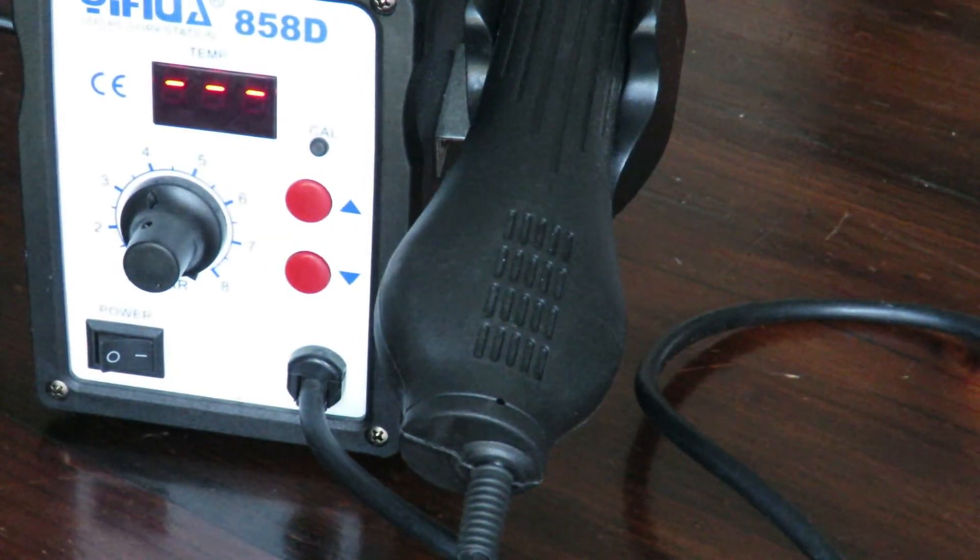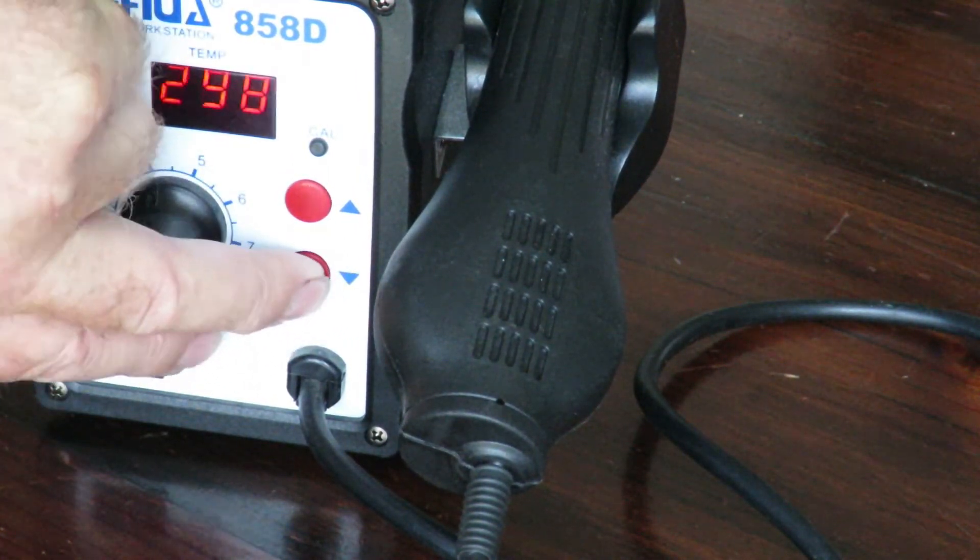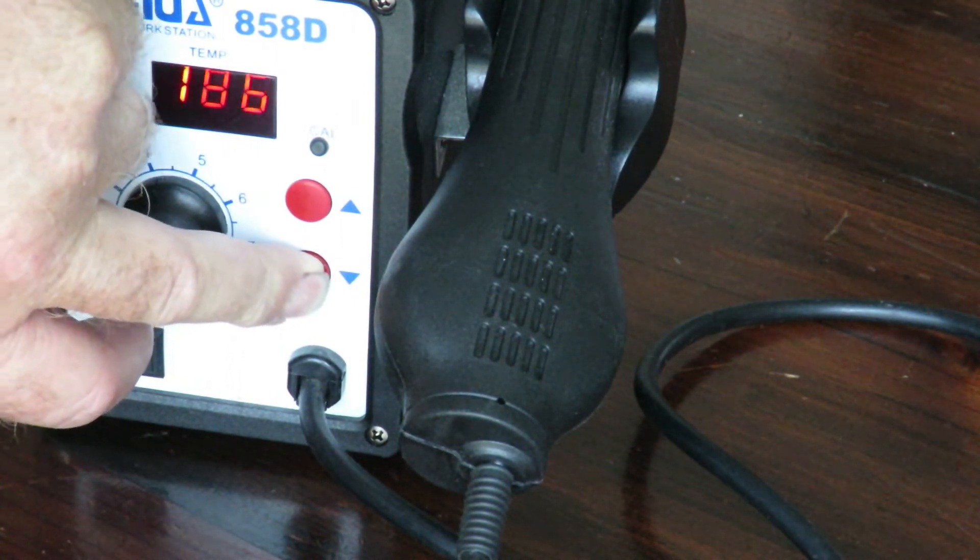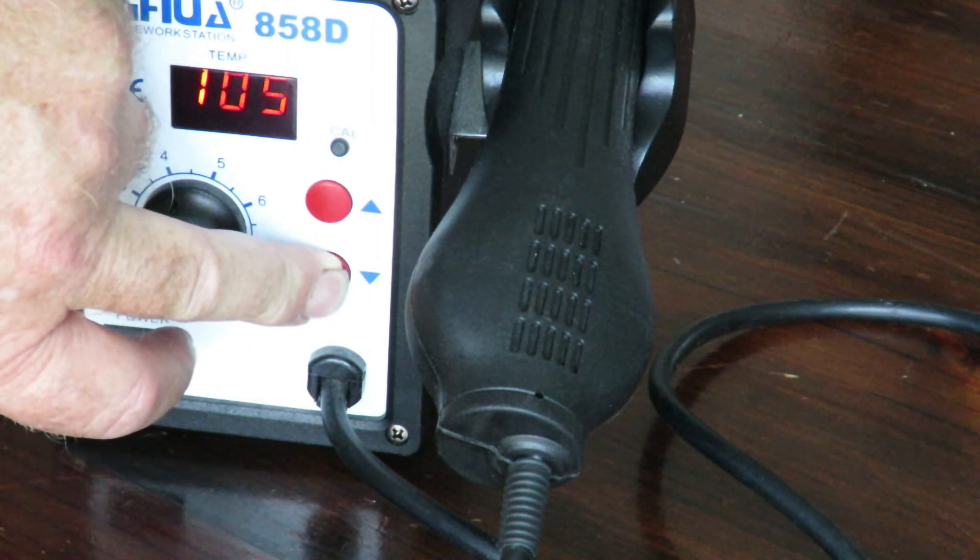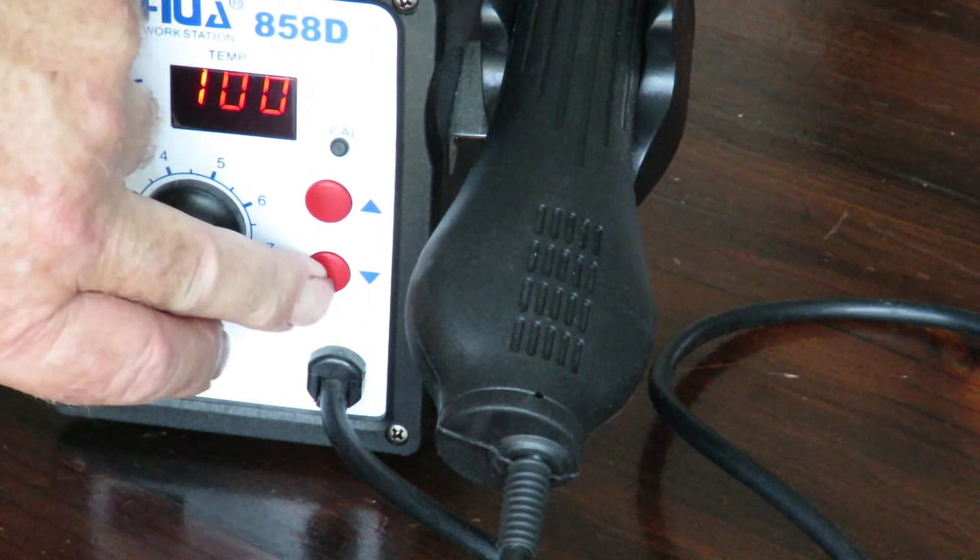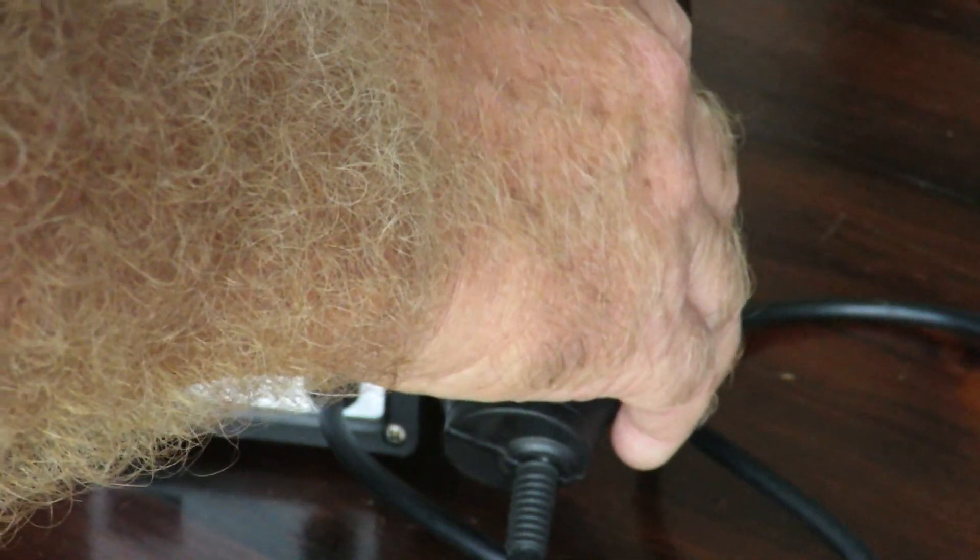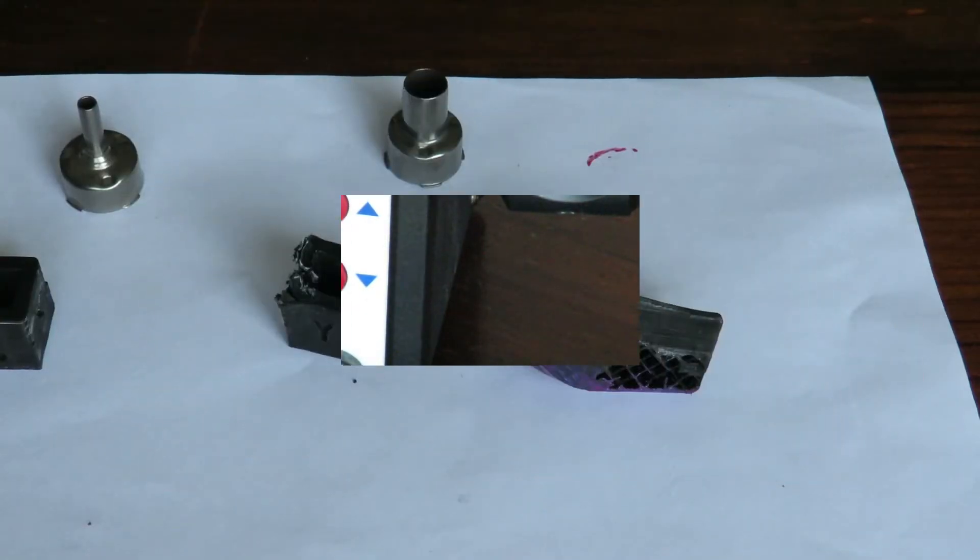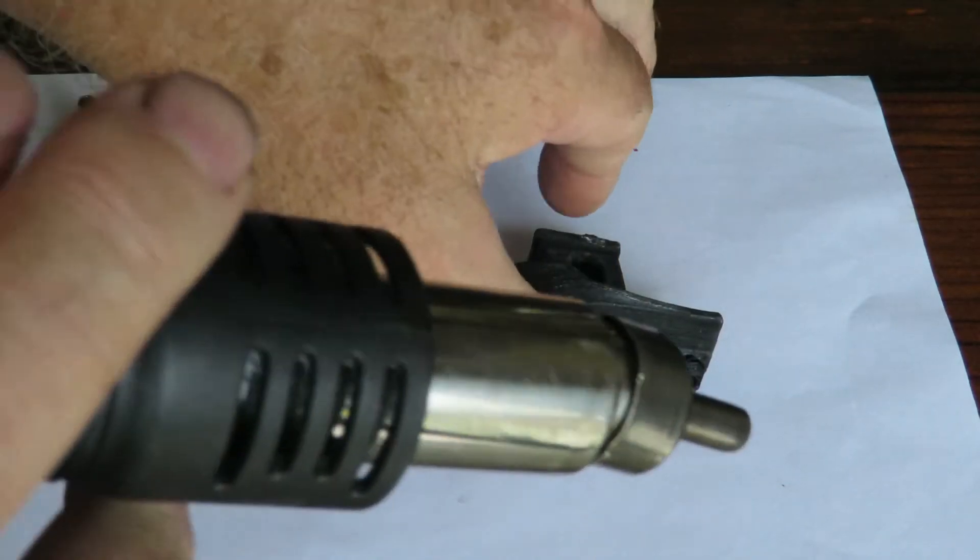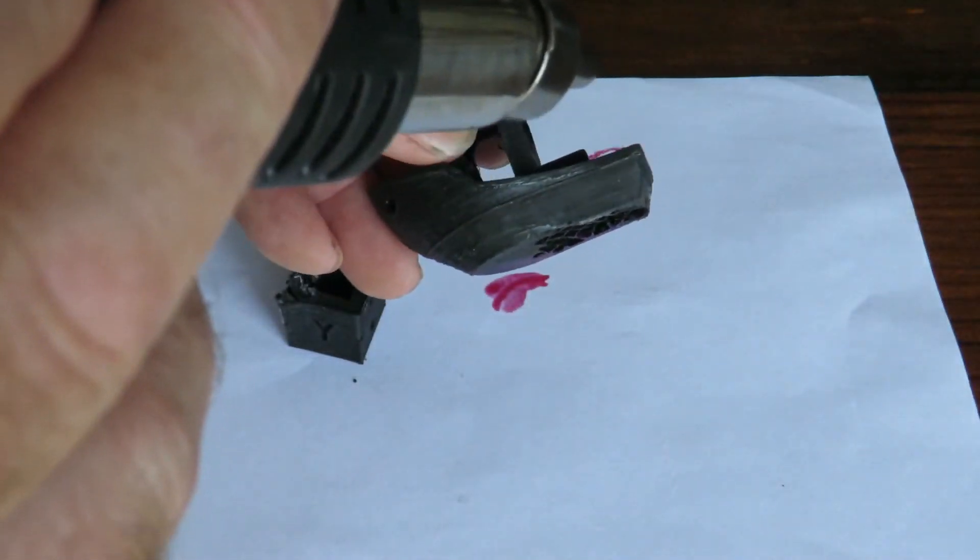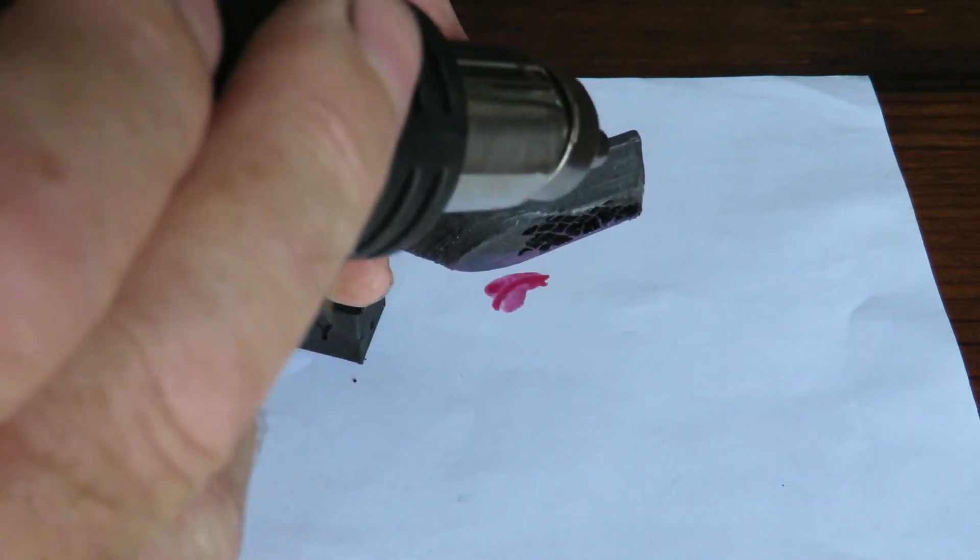Now what I can do with the reflow station is I can actually adjust the temperature. We know that the glass transition on PLA is 60, so I'm going to set this to - we'll try 80 initially. Actually it looks like 100, it won't go below that. Well, that fixes that. I'll just pop the little nozzle on and here we go. The reflow station is fired up and set to 100. It'll take a couple of seconds to get up to temperature.